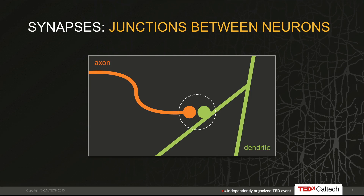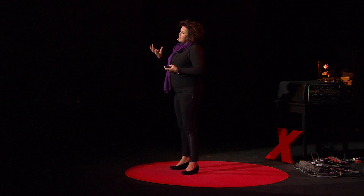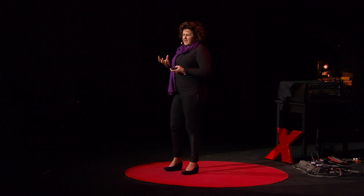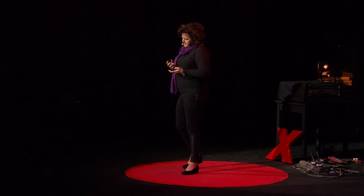Synapses are the junctions between two cells. One cell's axon — its transmission cable — comes in very close contact to another cell's dendrite, the receiving aspect of a neuron. And if we were to zoom in on the synapse, we would see that the synapse is jam-packed with protein. Synapses are where the information is stored, and proteins turn over.